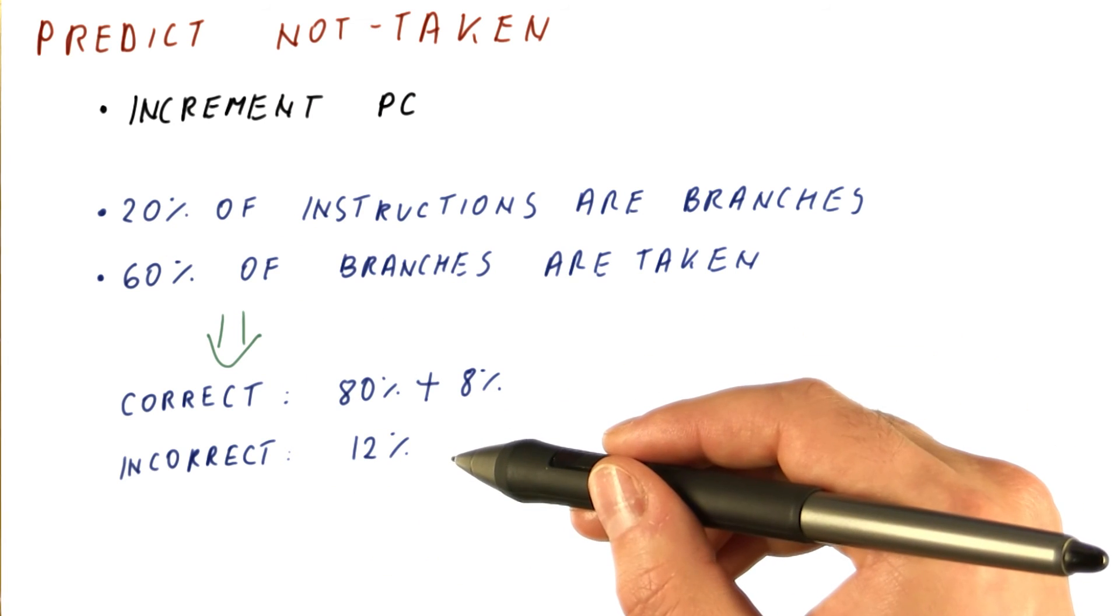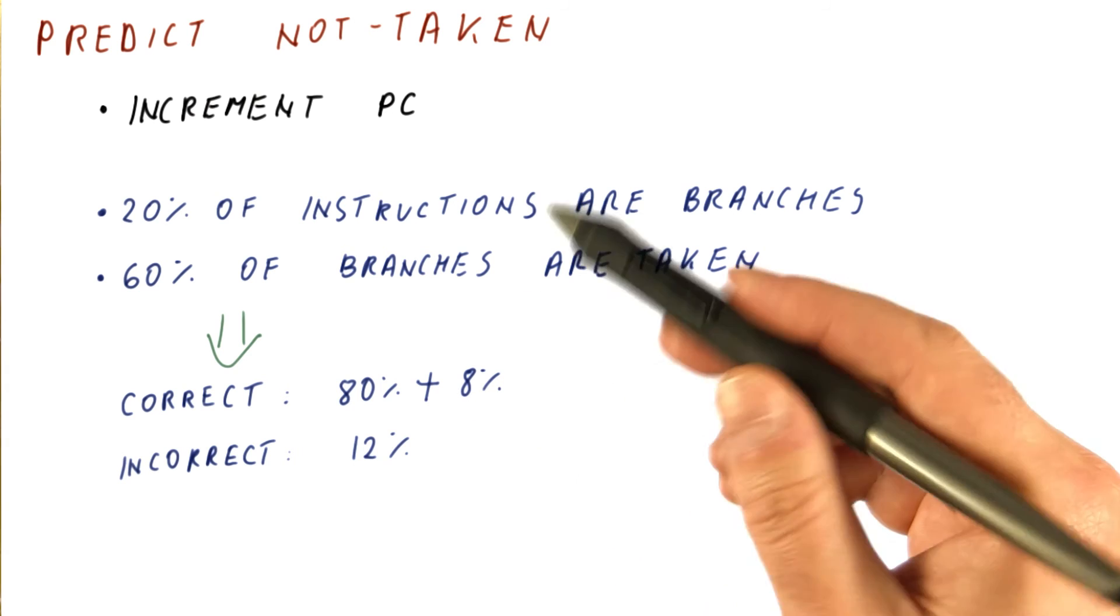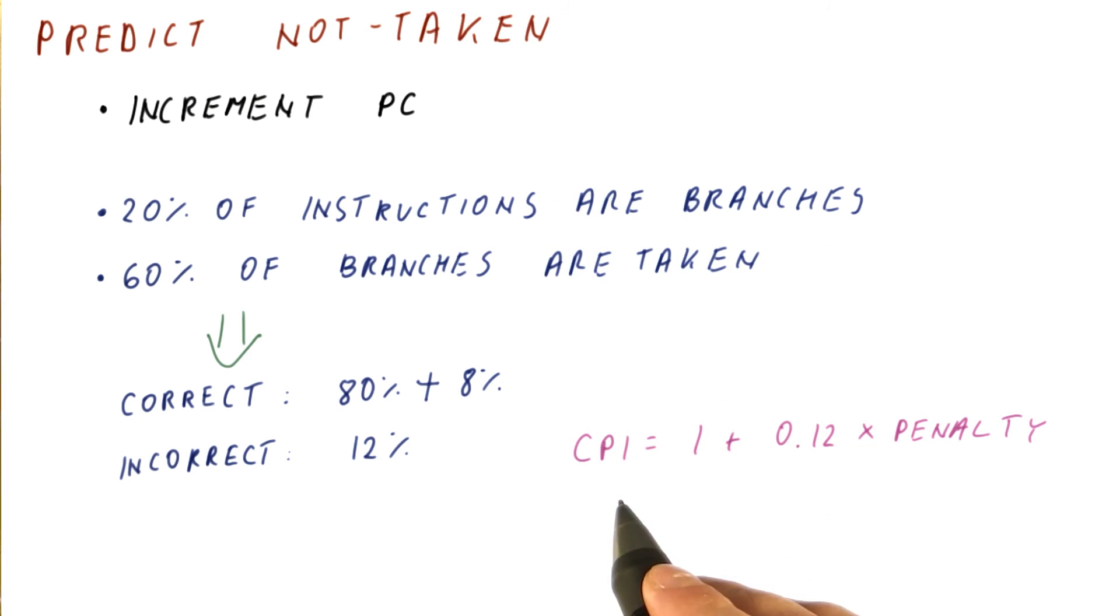Now if we know the misprediction penalty, we can easily compute what is the impact on CPI of branch mispredictions. The CPI will be 1 plus 12% times the penalty. In a five stage pipeline, this would be 2, so the CPI would be 1.24.